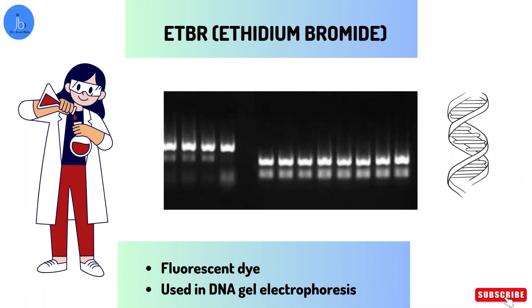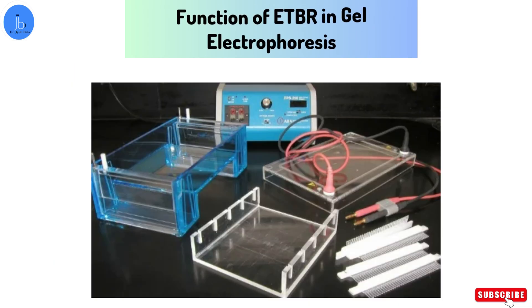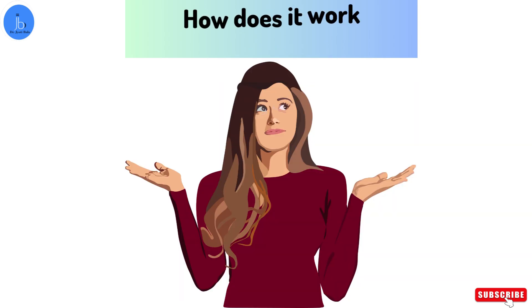EtBr, which is known as ethidium bromide, is a fluorescent dye commonly used in DNA gel electrophoresis. Its primary function is to visualize the DNA fragments as they migrate through the gel. So let's find out how it works.